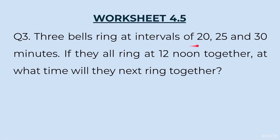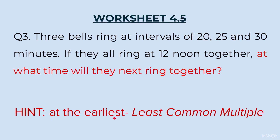Question 3: Three bells ring at intervals of 20, 25 and 30 minutes. If they all ring at 12 noon together, at what time will they next ring together? The key phrase is 'next ring together' — at the earliest. 'At the earliest' means minimum time, and minimum means least. Wherever the word minimum, earliest, or least appears, you have to find the Least Common Multiple — the LCM of 20, 25 and 30.